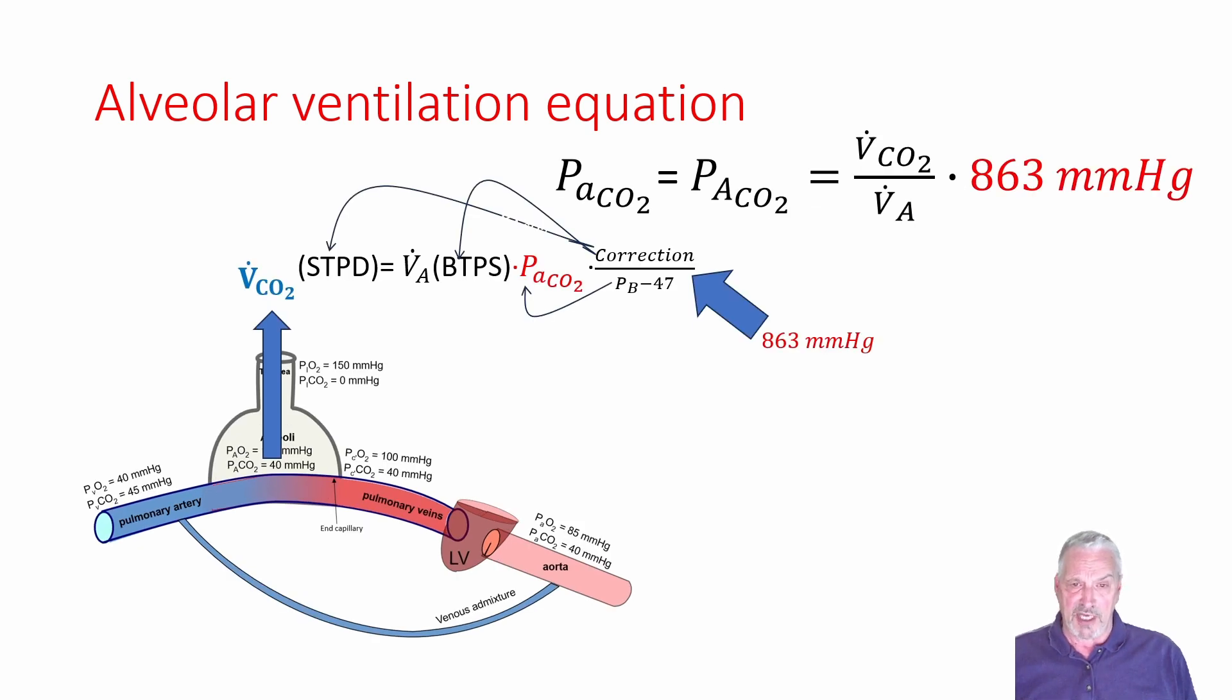So that leaves us with one more thing to do here. And that is, how do we turn an FACO2 into a PACO2? And the way we do that is to divide by barometric pressure. So we substituted from the last equation, FACO2 with PACO2 by multiplying by this. And then the next thing we need is a correction factor that makes up for the fact that we measure the rate at which air flows out of the patient's body under body temperature pressure saturated conditions.